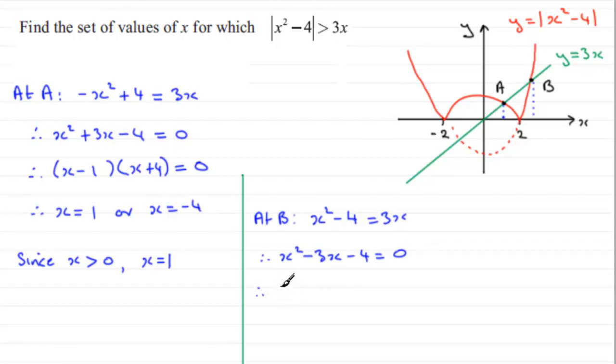And factorising this gives us two brackets equaling 0. We'd have in the first bracket x plus 1, and in the second bracket x minus 4. And this leads to the solutions x equals minus 1 or x equals 4. Which one do we pick here? Well, again, we know that at B, the x-coordinate's got to be greater than 0. So since x has got to be greater than 0, clearly x must be equal to 4 at B.